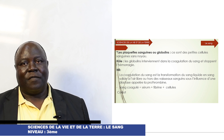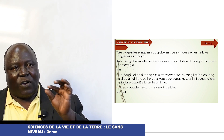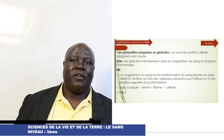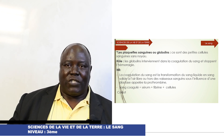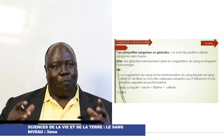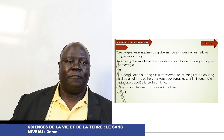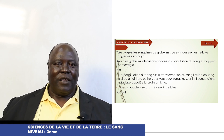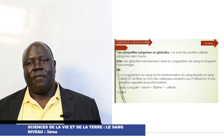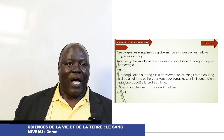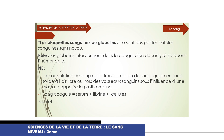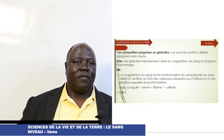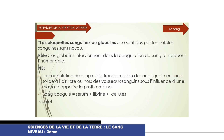Les plaquettes sanguines ou thrombocytes sont des cellules sanguines de petite taille mais sans noyaux. Ces cellules jouent un rôle dans la coagulation du sang et arrêtent l'hémorragie, c'est-à-dire la perte de sang en cas de blessure. La coagulation du sang c'est la transformation du sang liquide en sang solide à l'air libre, en dehors des vaisseaux sanguins, sous l'influence d'une enzyme appelée la prothrombine. Le sang coagulé est le sang qui porte du sérum, de la fibrine et des cellules, formant un caillot.